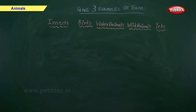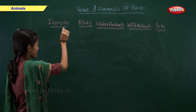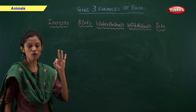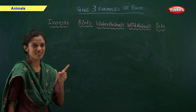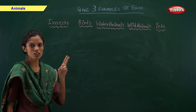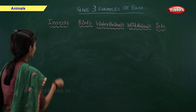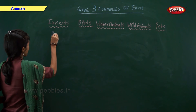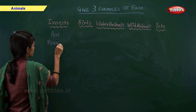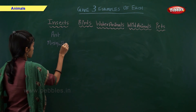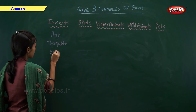Give three examples of each. Insects — give me three examples of insects. Come on fast. Right: ant, mosquito and spider.